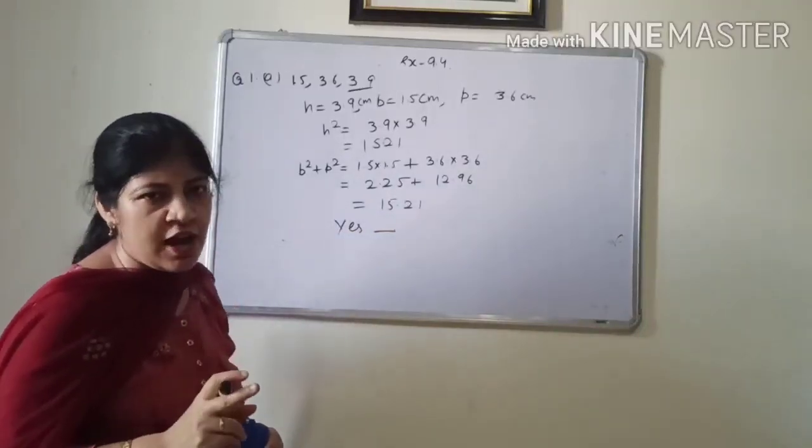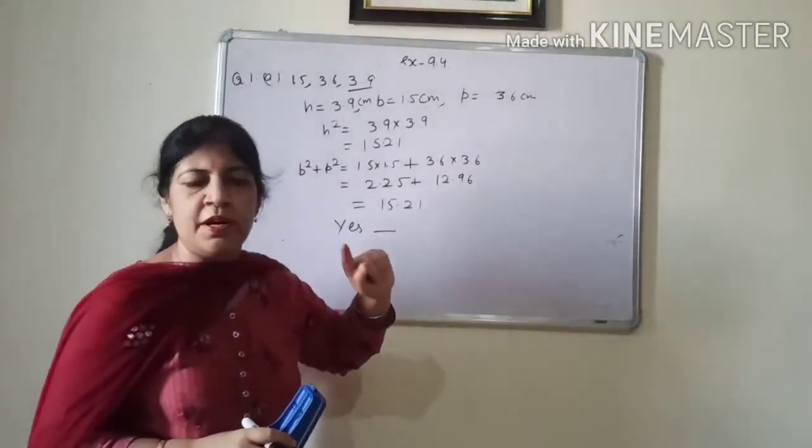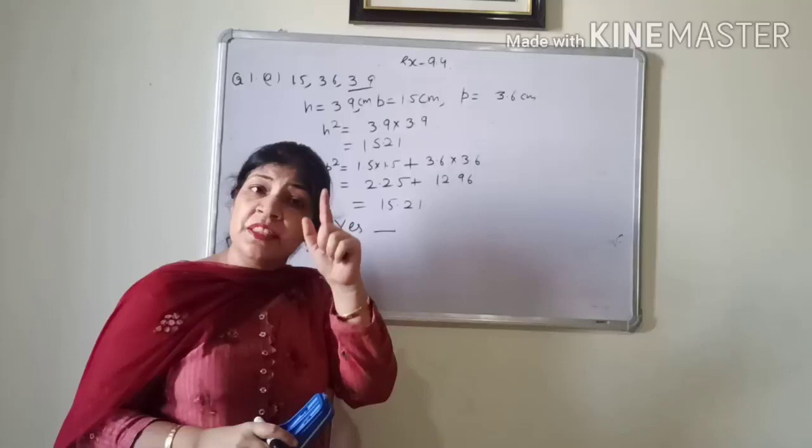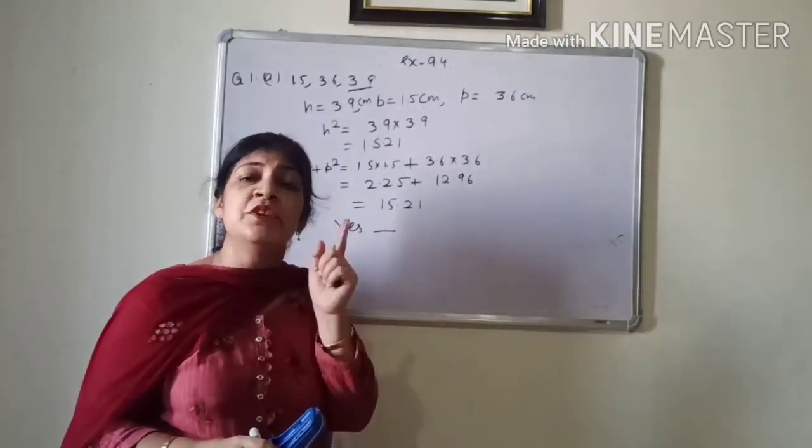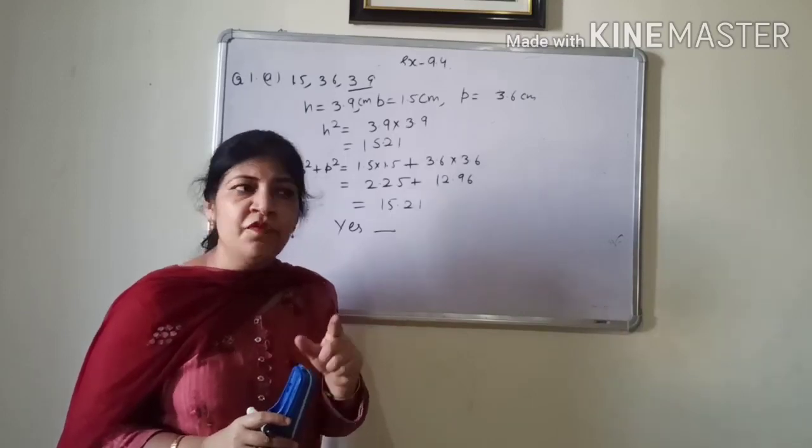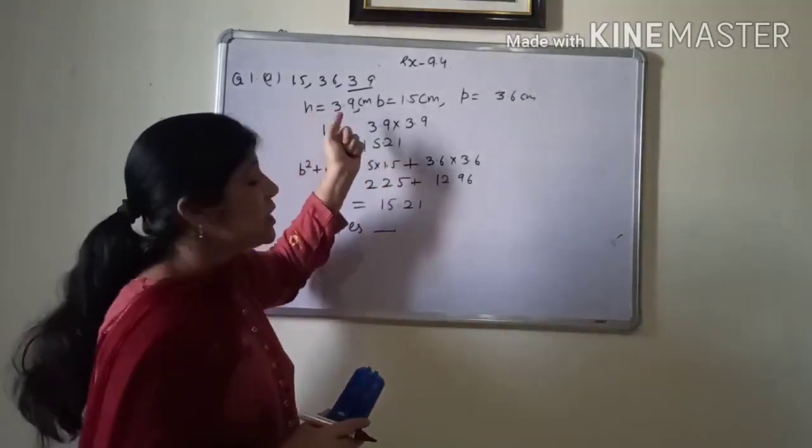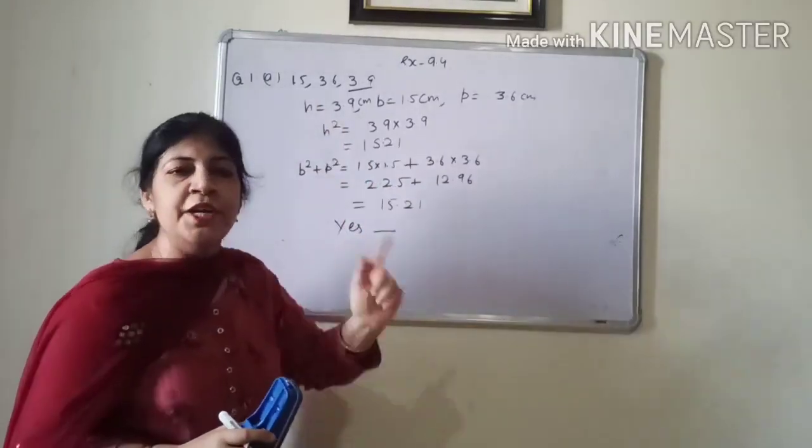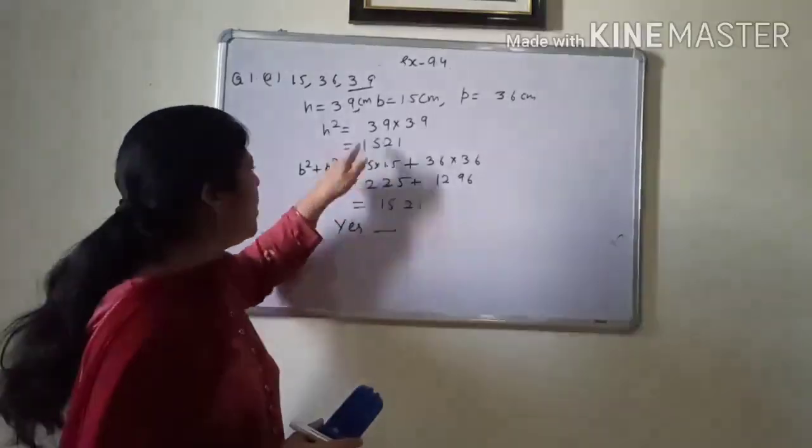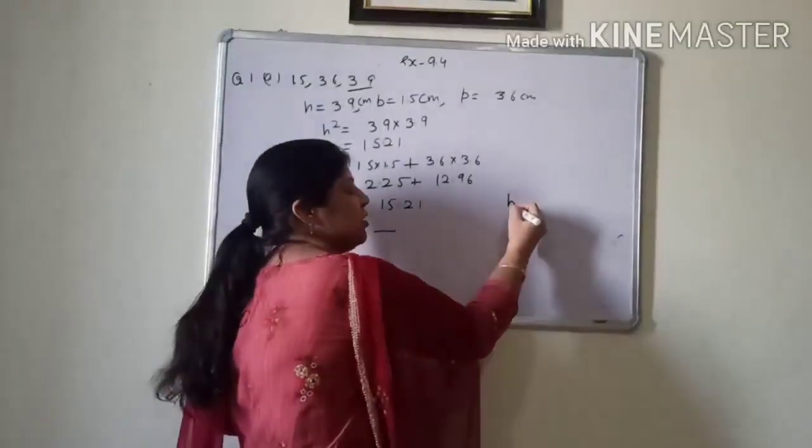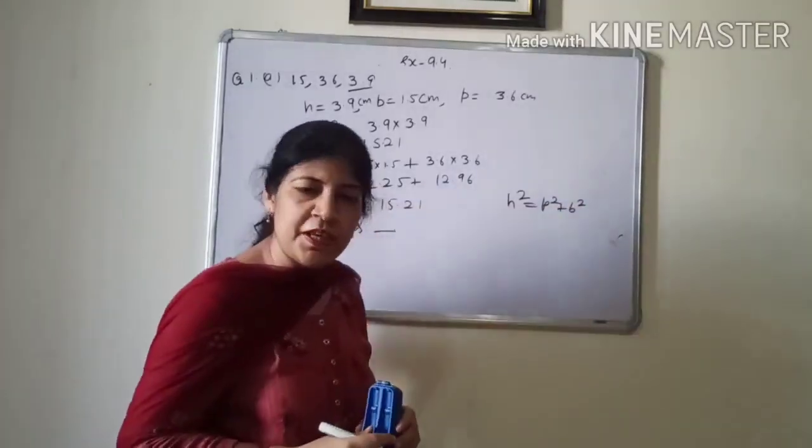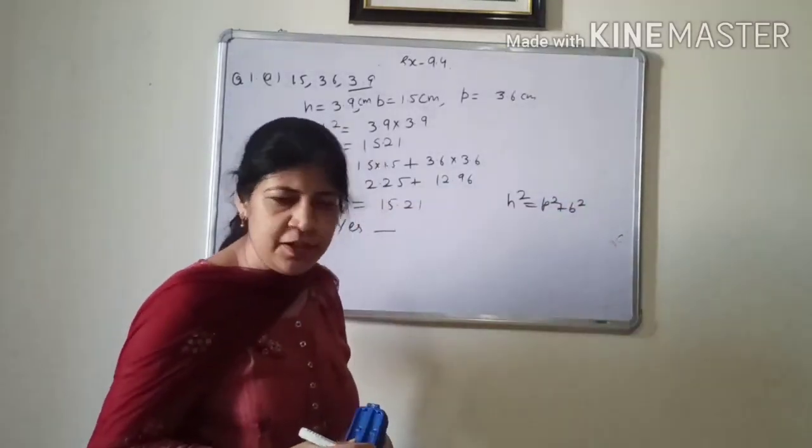If it is asked whether the given sets of numbers are the sides of a triangle only, in that case you need to apply triangle inequality property. But if it is asked the given sets of numbers are the sides of a right angle triangle, in that case you need to apply Pythagoras theorem. h square is equal to p square plus b square. Is that clear?